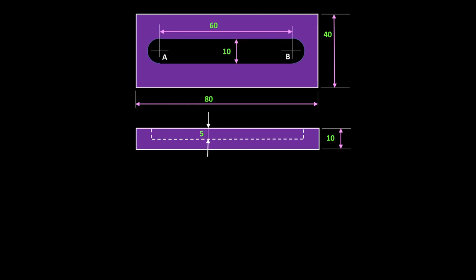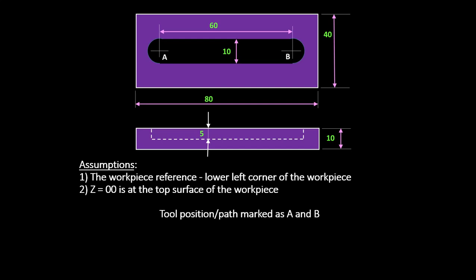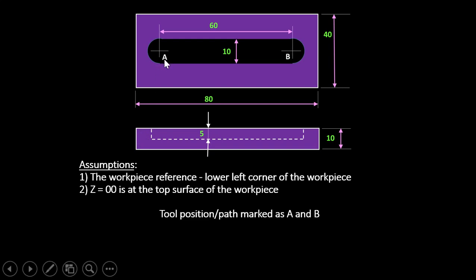First, we write our assumptions and then make a tabulation for the cutter positions. The assumption is that the lower left corner of the workpiece is our reference point for all dimensions and cutter positions. Z00 is set at the top of the workpiece, so all dimensions above it are positive and below it are negative.